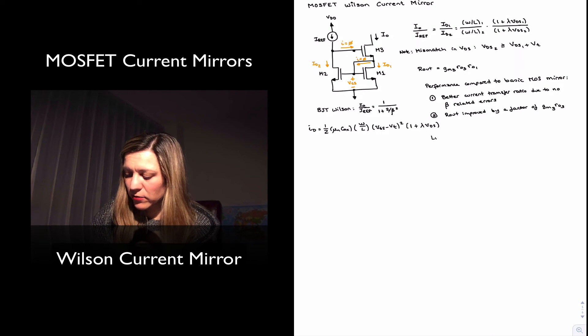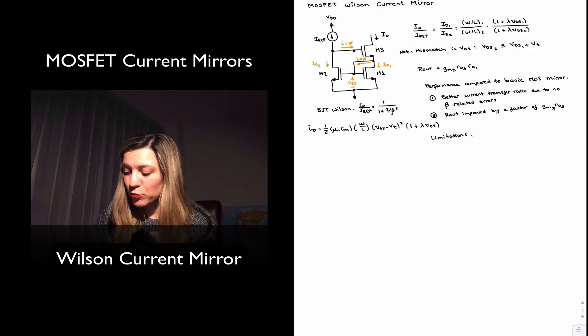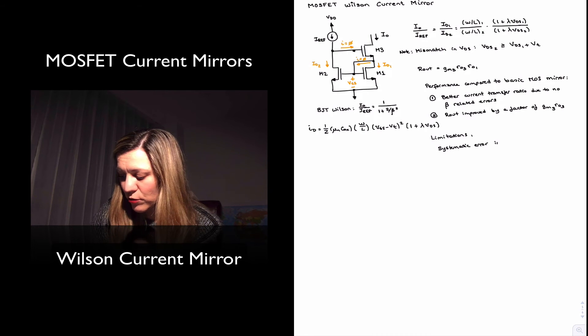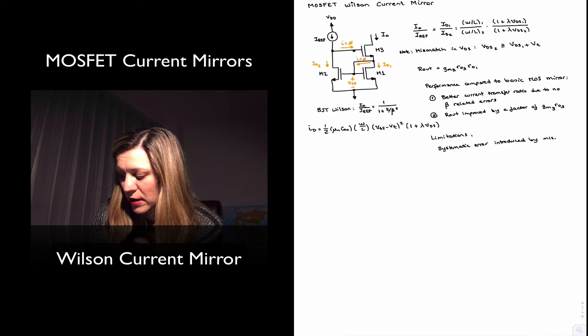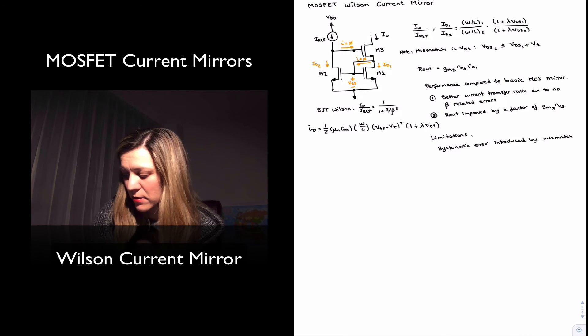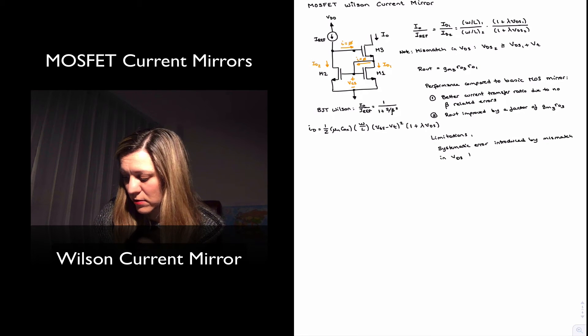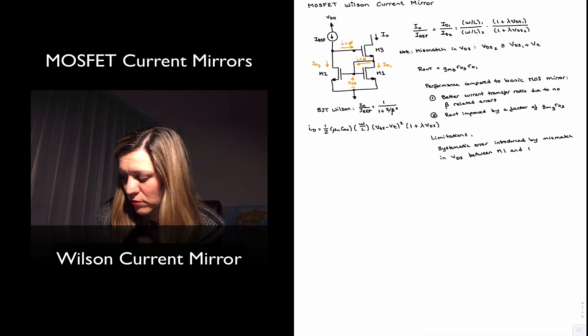Limitations of this circuit, if you want to call them that way. And the main limitation would be the systematic error introduced by a mismatch in VDSs between M1 and M2 of at least VT.